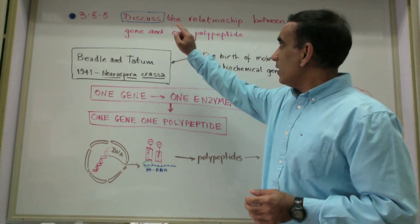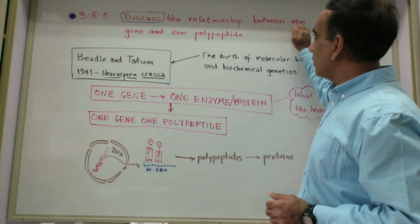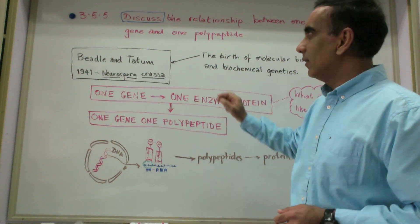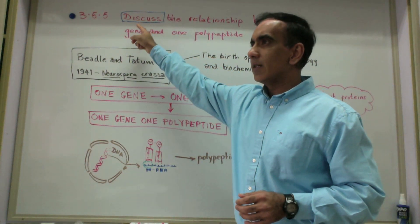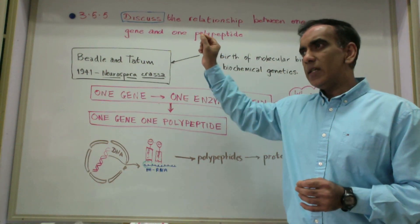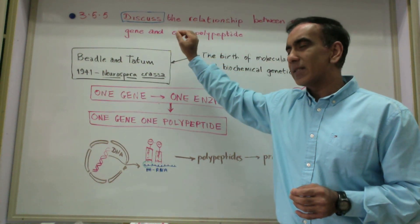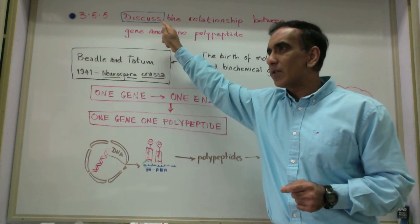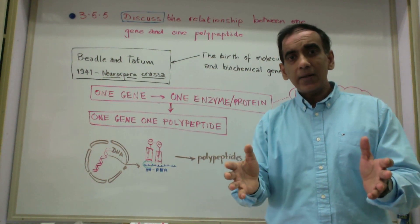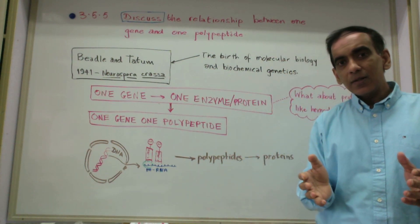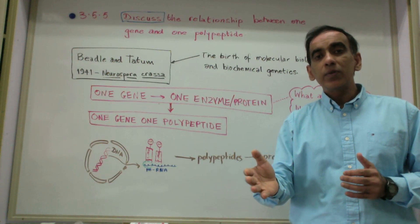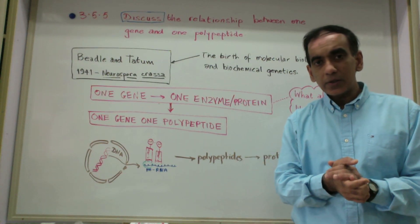Welcome. Today we discuss the relationship between one gene and one polypeptide. Let's begin first with the command term 'discuss.' When you see a question or statement beginning with this command term in IB Biology, it requires you to first outline the process and then look at alternative hypotheses or pros and cons for a particular situation.